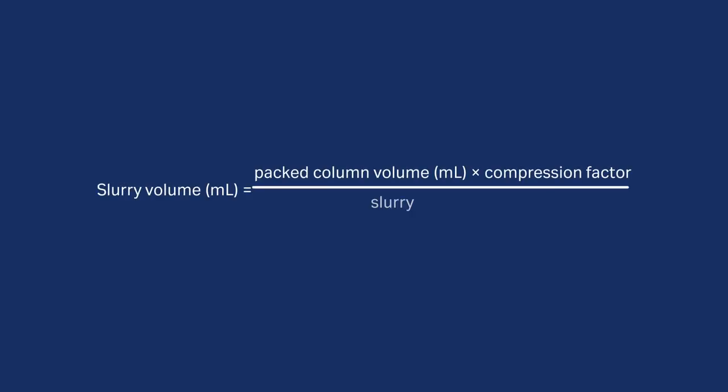To calculate the slurry volume needed to pack a column at a certain volume, the following equation can be used. For example, to pack a 120 mL column with a resin that has a slurry concentration of 75% and with a compression factor of 1.15, the necessary slurry volume will be 184 mL. The compression factor is often found in the instruction for the resin. If not available, use a compression factor of 1.15.